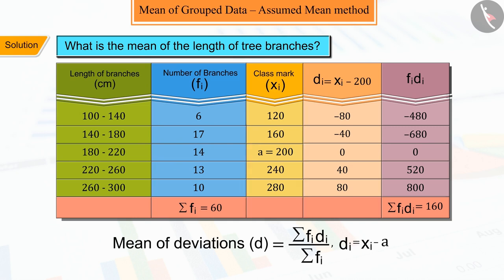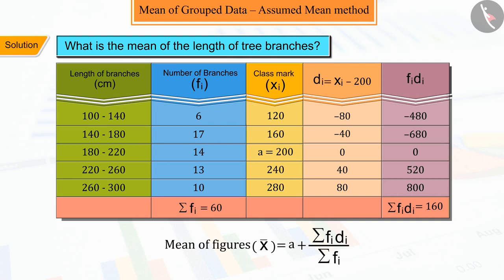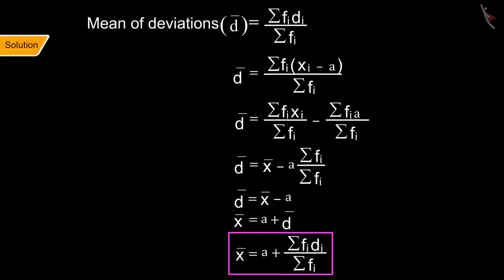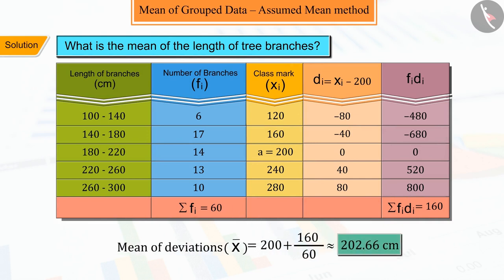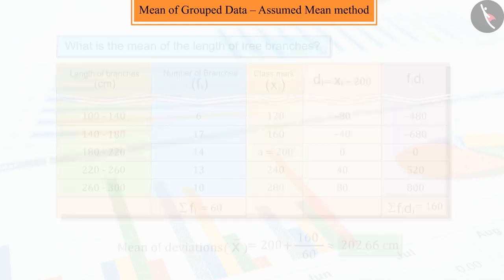So, while finding the mean, we have to add a to d̄, which is explained as below. From which the mean of the lengths of the branches is calculated as approximately 202.66 cm.